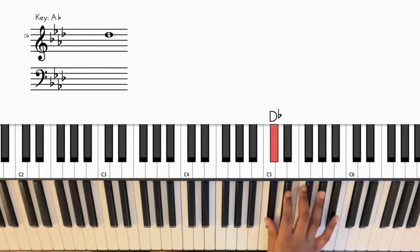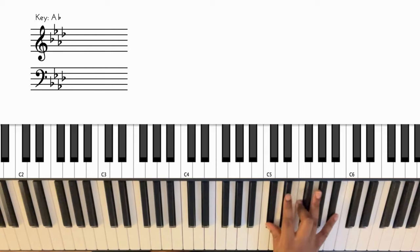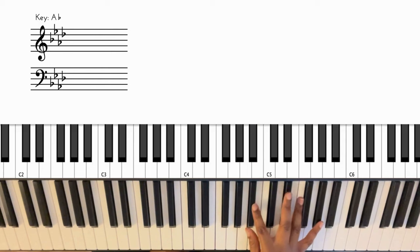So that first one is B, E flat, A flat. Then we go up to C sharp, F, and B flat. So so far...